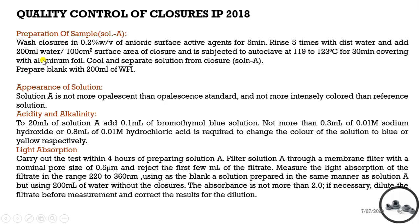We add 200 ml of distilled water per 100 cm² surface area of the closure. Then it is subjected to autoclave at 119 to 123°C for 30 minutes, covered with water. Then we cool and separate the solution from the closure. Blank will be 200 ml of water for injection.